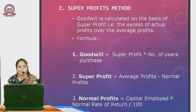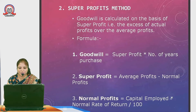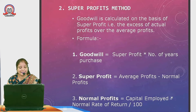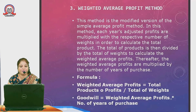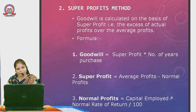In the super profit method, goodwill is calculated on the basis of super profit — the excess of actual profit over the average profit. Goodwill = Super Profit × Number of Years Purchase. Super Profit = Average Profit − Normal Profit. Normal Profit = Capital Employed × Normal Rate of Return.